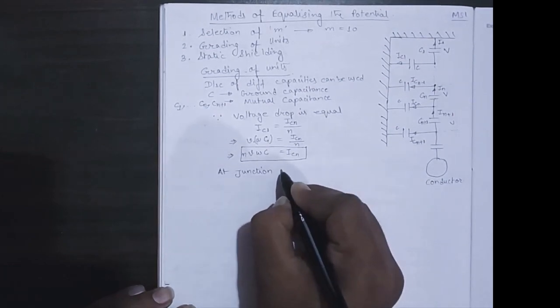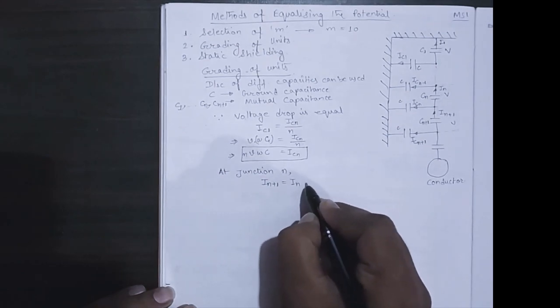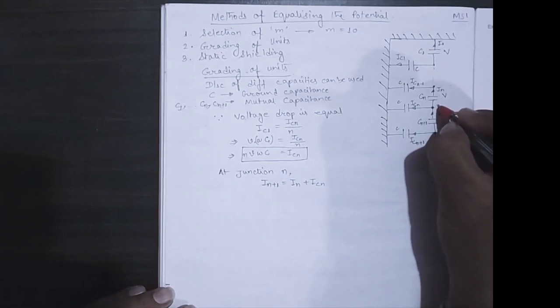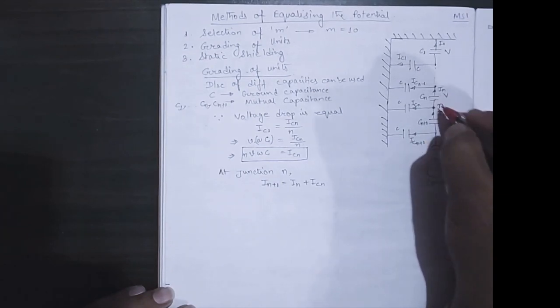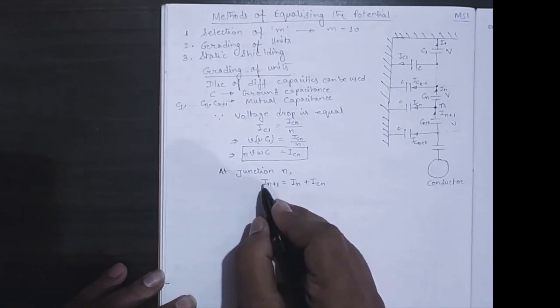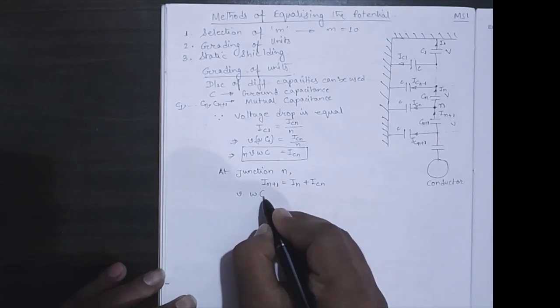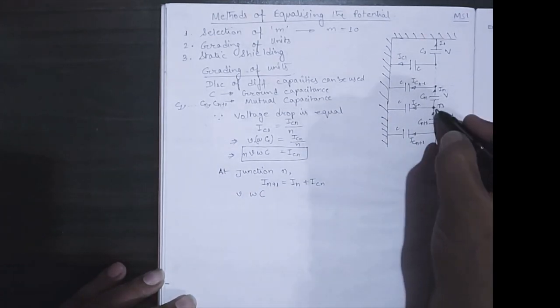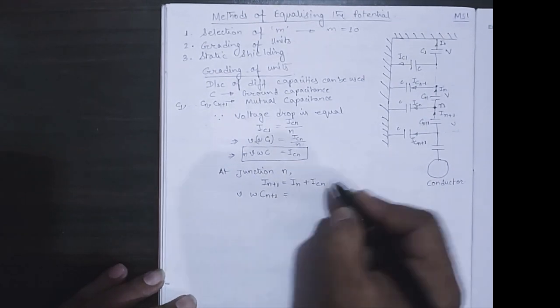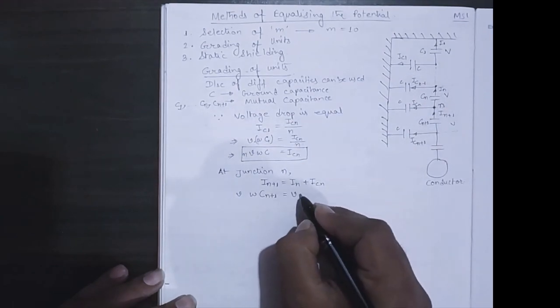Now we name a junction n in figure. In figure, this point is n. So if you look at this point, you will see that in plus one equal to in plus icn. Now we will be putting values, that is icn plus one is v omega cn plus one.